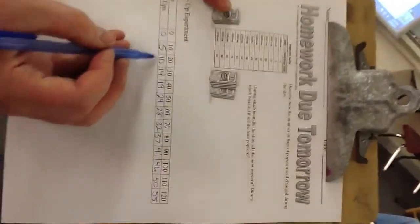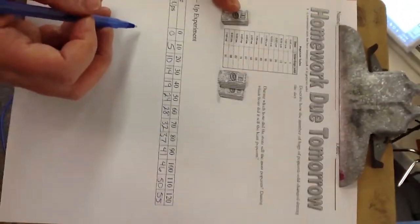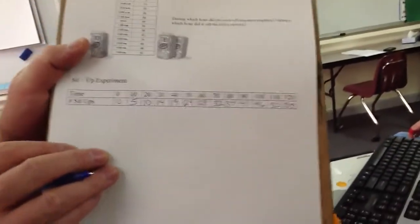All right. So you should, at the end, have a table that looks like this, that has the number of sit-ups completed each ten seconds, and we'll do more with that data.